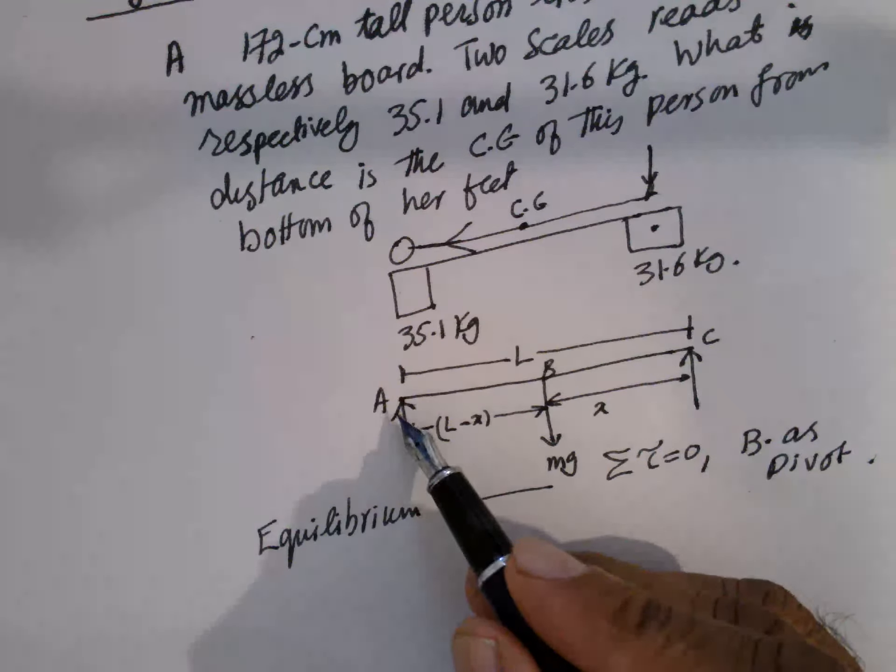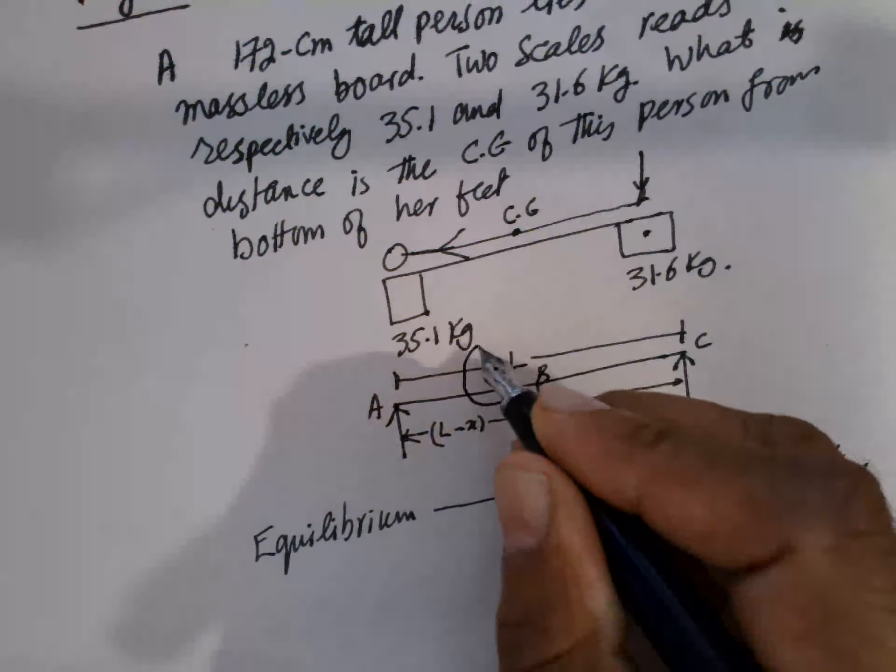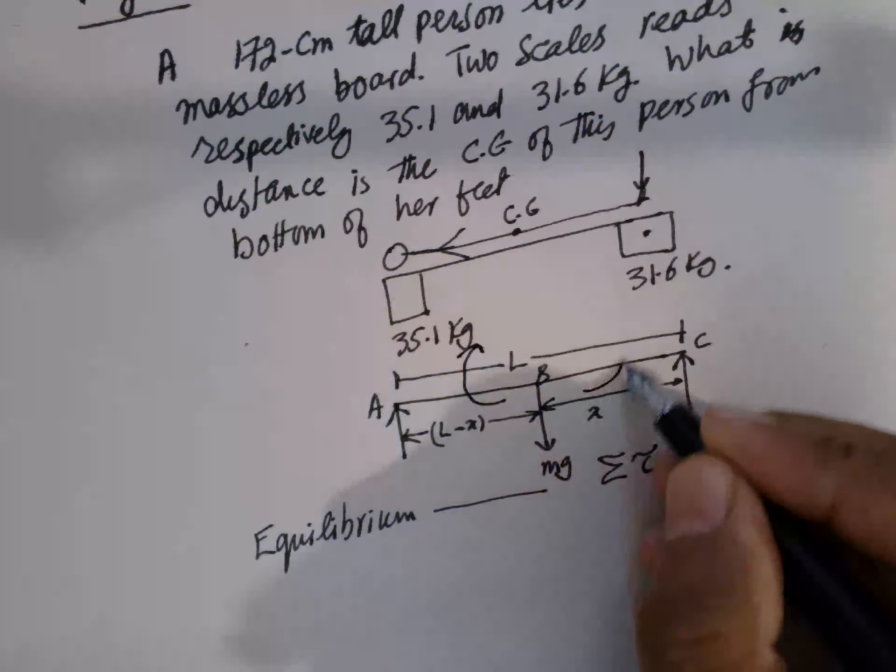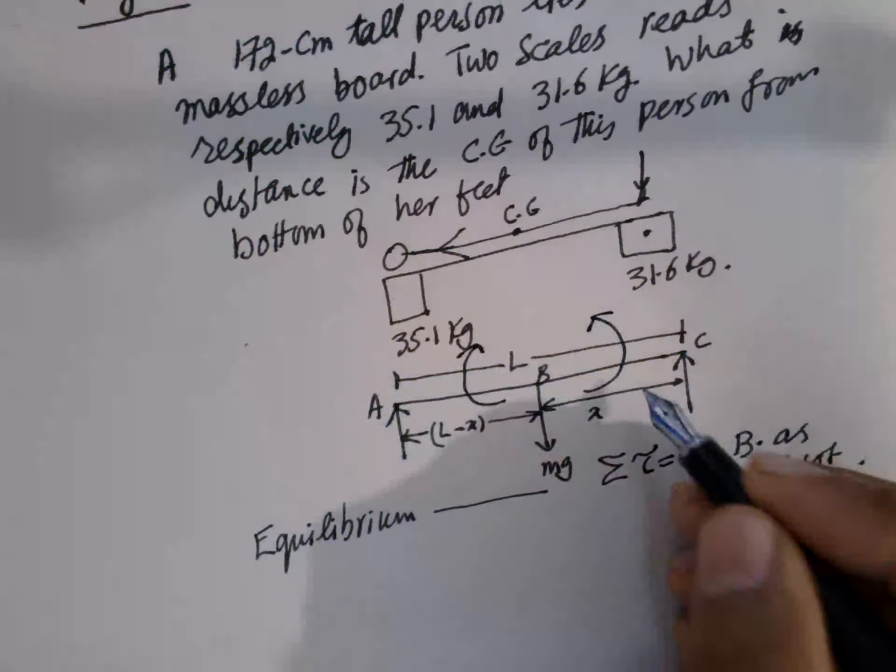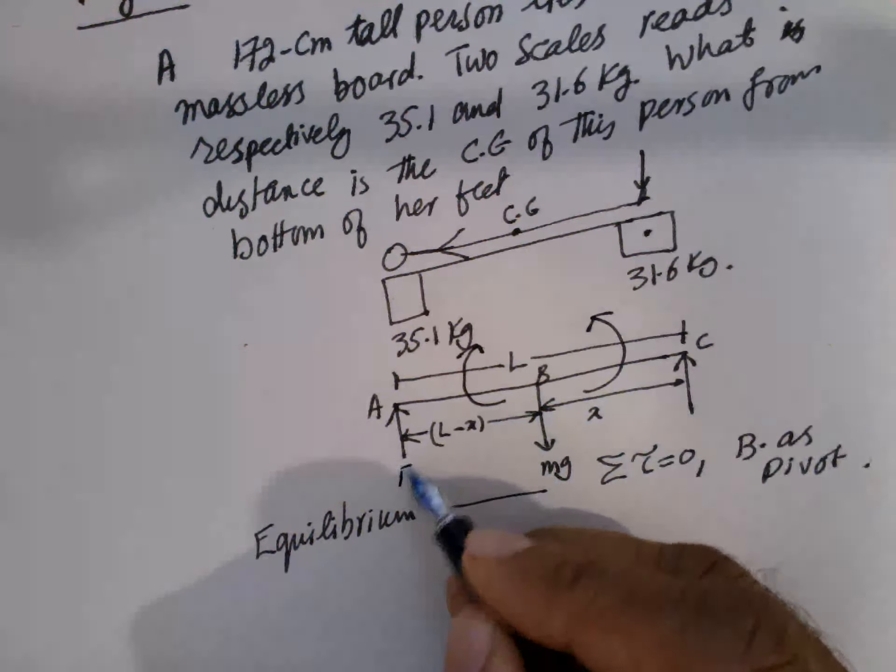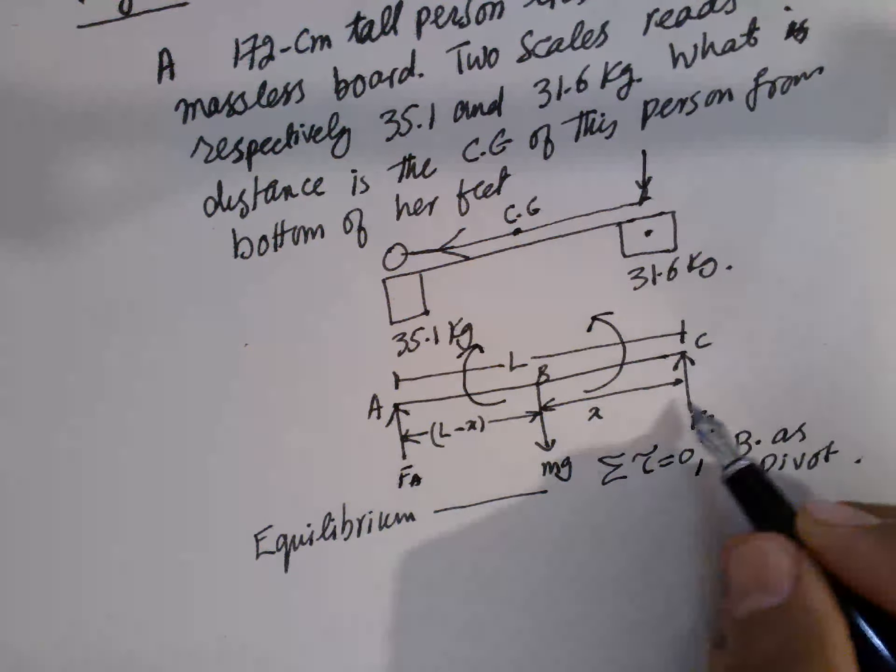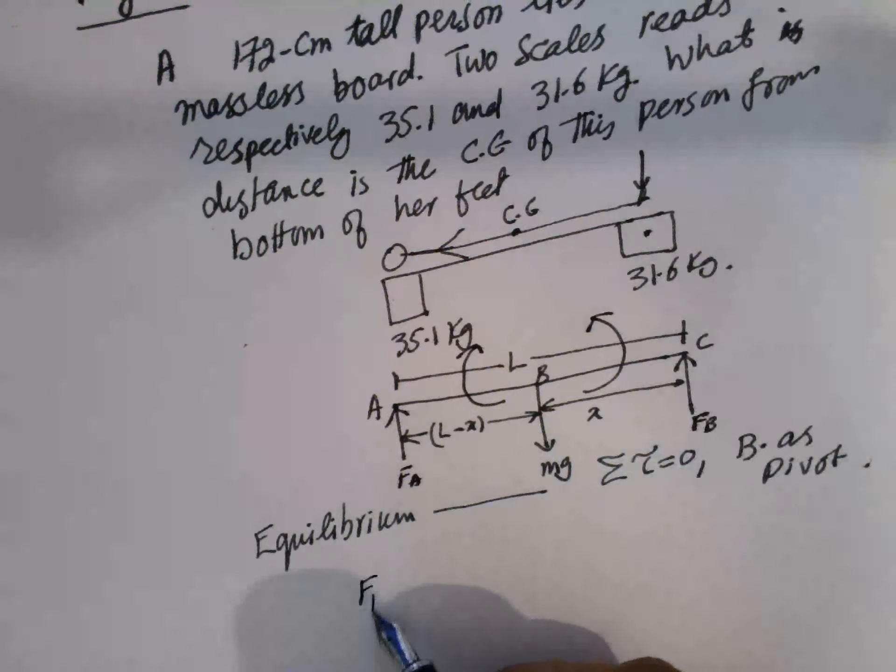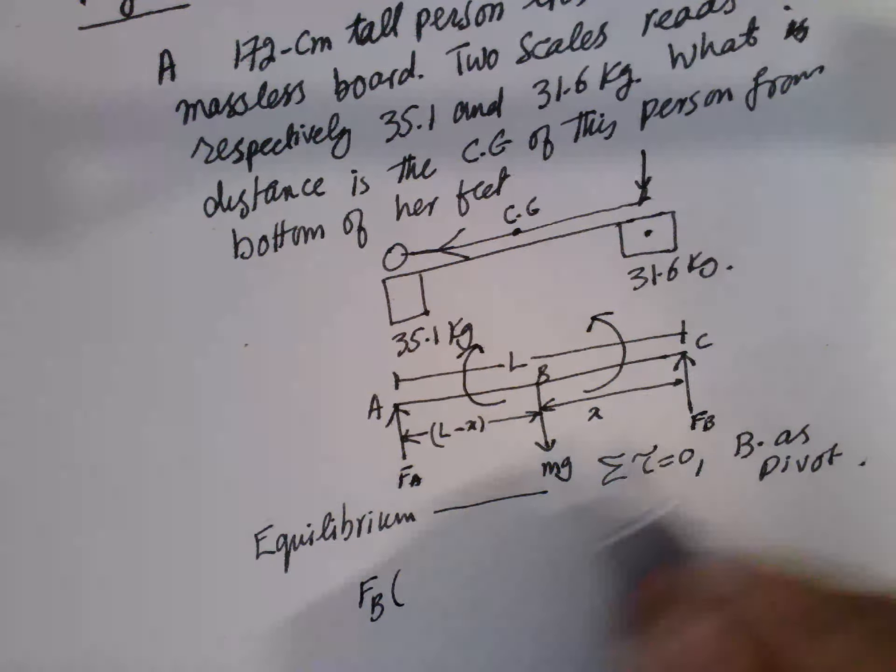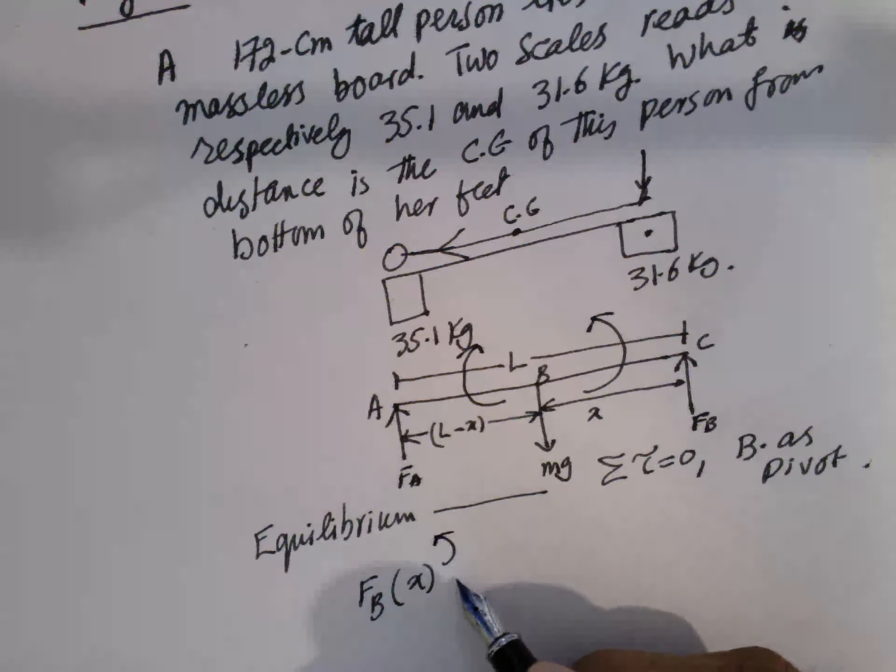And so if you consider this one, this is arm. So this is clockwise and this is anticlockwise. Anticlockwise is positive. So this is FA force, this is FB force. So FB into arm is X. This is positive. This is anticlockwise.